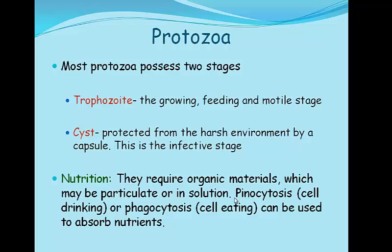Most protozoa possess two stages: the trophozoite stage and the cyst stage. In the trophozoite stage, this is the growing, feeding and motor stage, whereas the cyst stage is the infective stage.